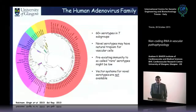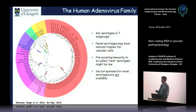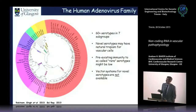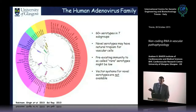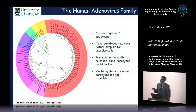Unlike AAV, the human adenovirus family is extremely large — over 60 human adenovirus serotypes and many hundreds of non-human adenoviruses, with not a lot known about many of them. AD5 is the most commonly used. Some viruses have been used for specific settings — for example, adenovirus 35, a B-group virus, has been used to target CD46 on tumors. You can modify the serotype to suit your needs.